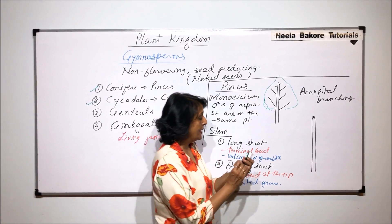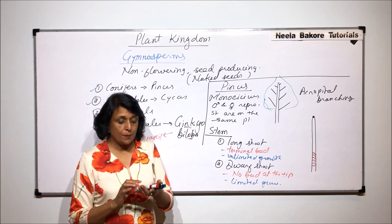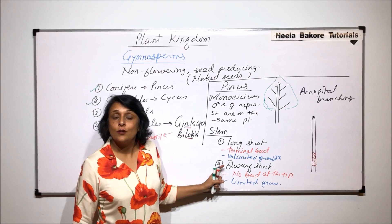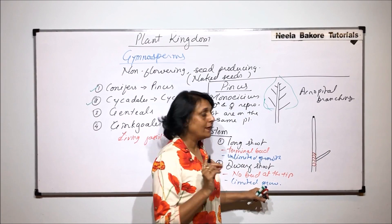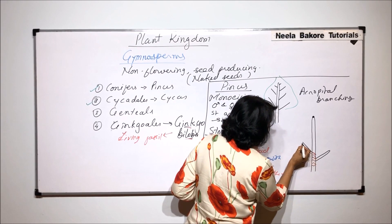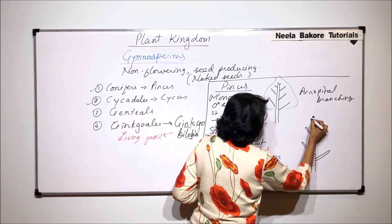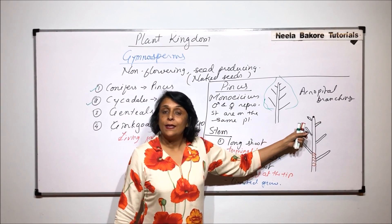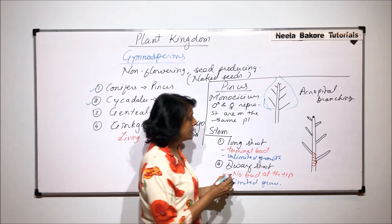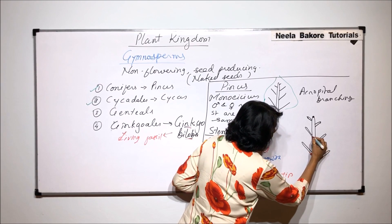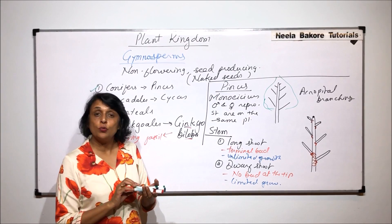The long shoot is covered with scaly leaves. From the axillary position of these leaves arise the shorter shoots, or dwarf shoots, which have no bud at the tip and therefore have limited growth. The arrangements are acropetal — lower branches are older and longer, upper branches are shorter and younger. These branches arise from the axillary part of the scaly leaves. So there are two types of branches: the long shoot and the dwarf shoot.